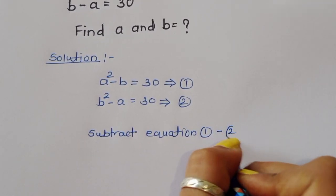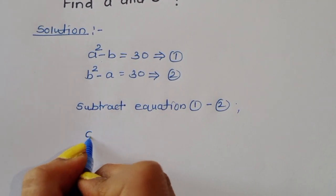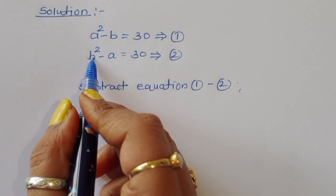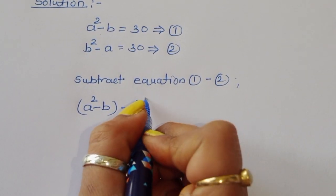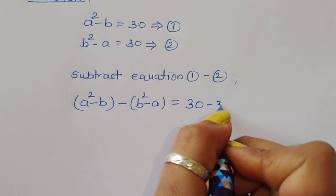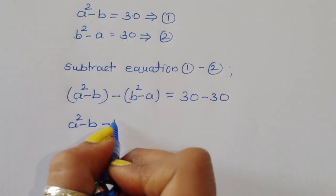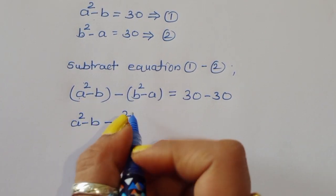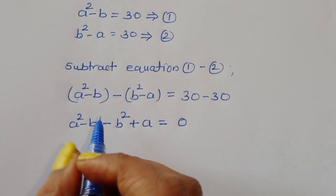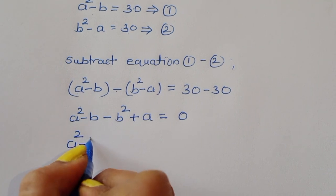Doing 1 minus 2: equation 1 is a squared minus b, minus equation 2 which is b squared minus a, equals 30 minus 30. So we get: a squared minus b minus b squared plus a equals 0.